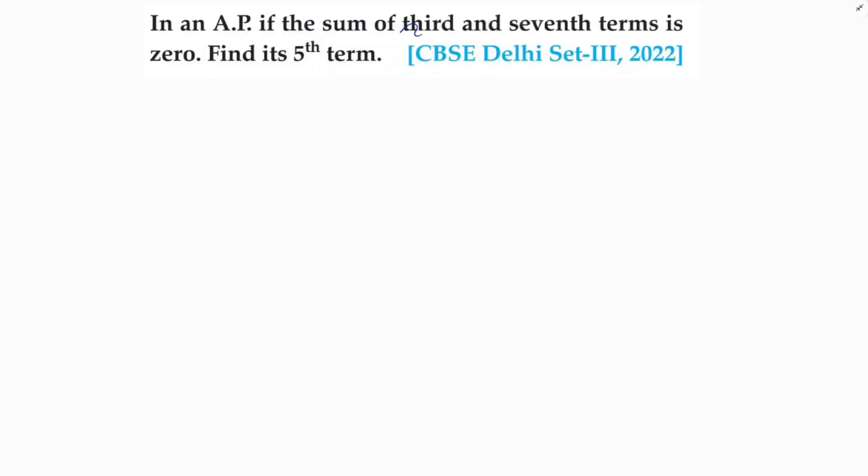In an AP, if the sum of third and seventh terms is zero, find its fifth term.